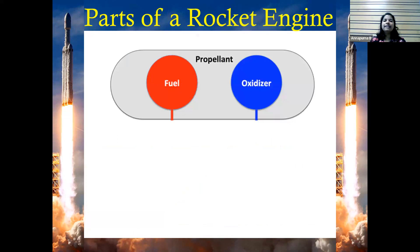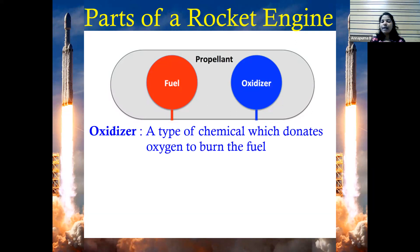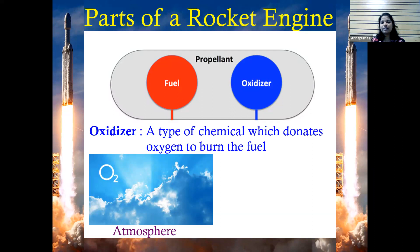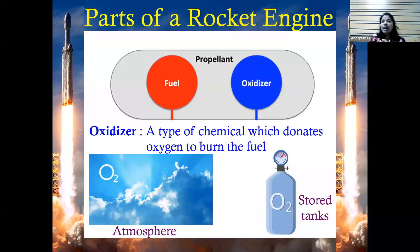Next comes the oxidizer. Fuel alone is not sufficient for propulsion — we also need an oxidizer. An oxidizer is a chemical that donates oxygen to burn the fuel. On Earth, we're lucky because about 21% of our atmosphere consists of oxygen, so it's easily available. But for rockets, we try to store oxygen in tanks and carry it along to provide the oxidizer-fuel mixture.